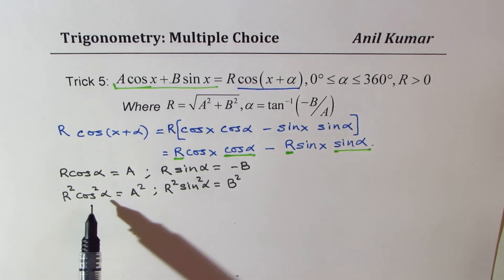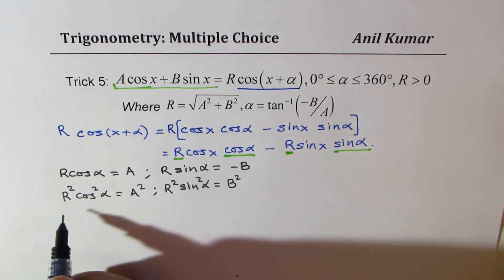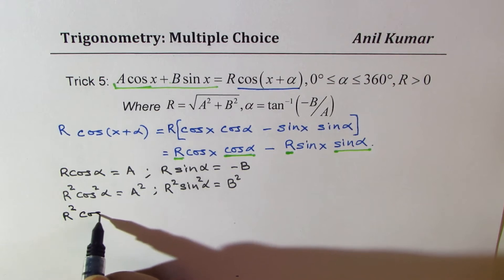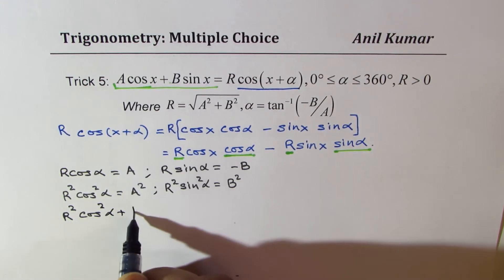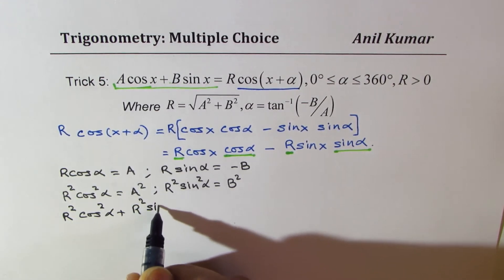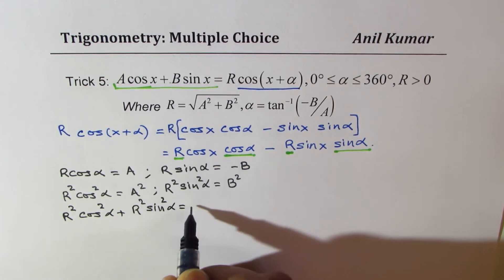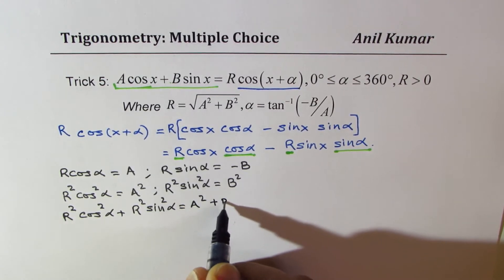From these, if I add them up, R squared cos squared alpha plus R squared sin squared alpha is equal to A squared plus B squared.